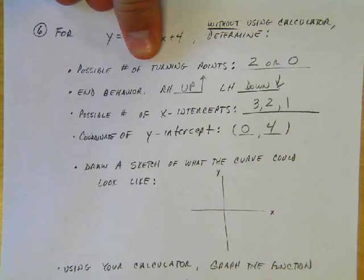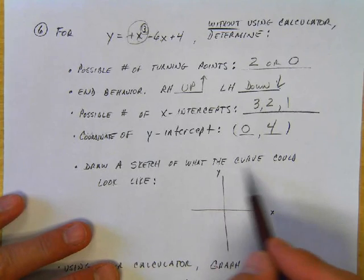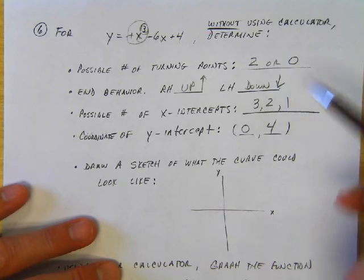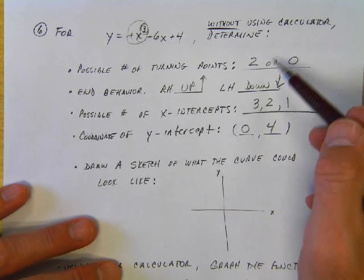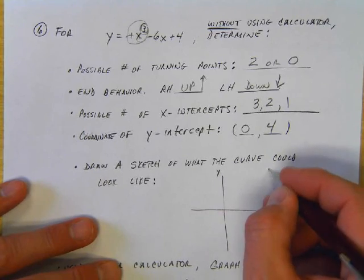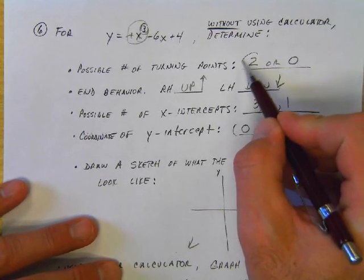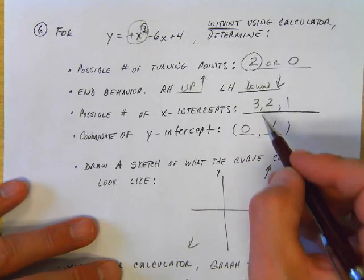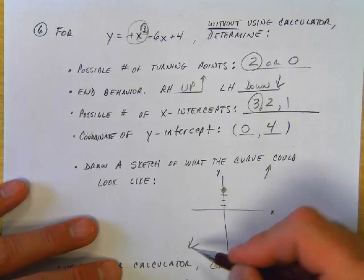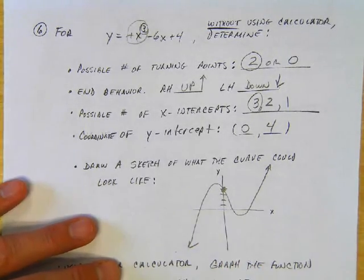Now, draw a sketch of what the curve could look like. There are lots of options depending on how many turning points and x-intercepts you choose. We know the right hand is up and the left hand is down. I'm going to choose 2 turning points and 3 intercepts. I know it crosses at 4, so one possibility could be that. You may have come up with something different, and that's okay.